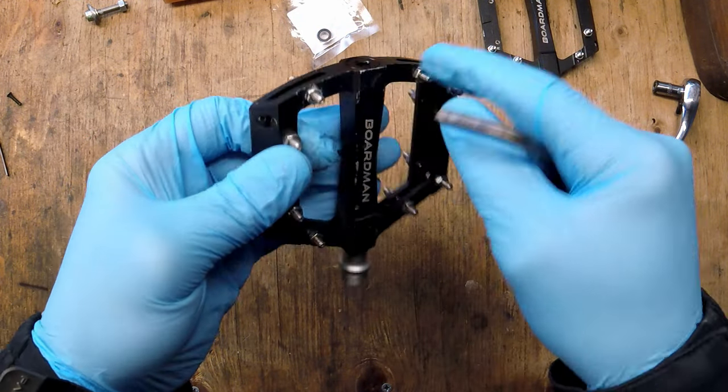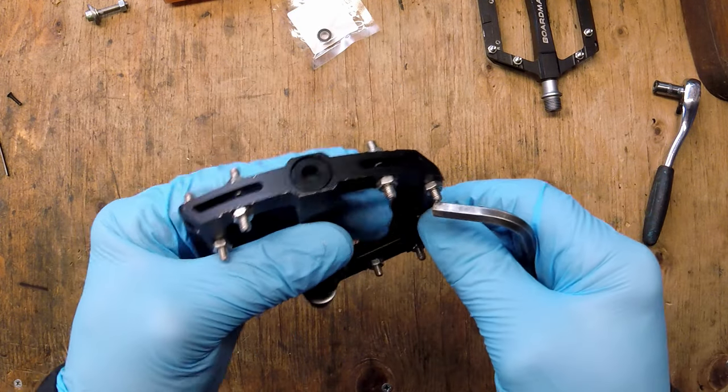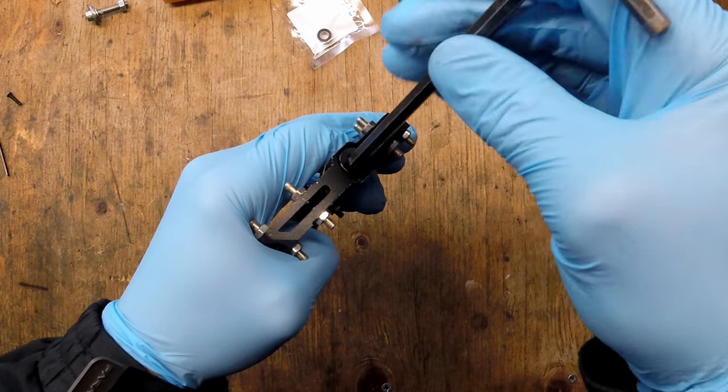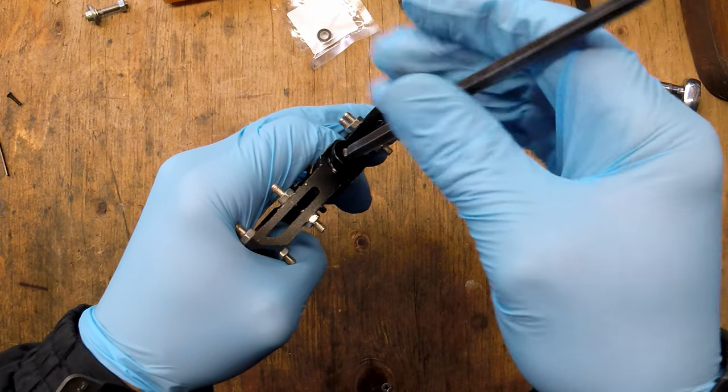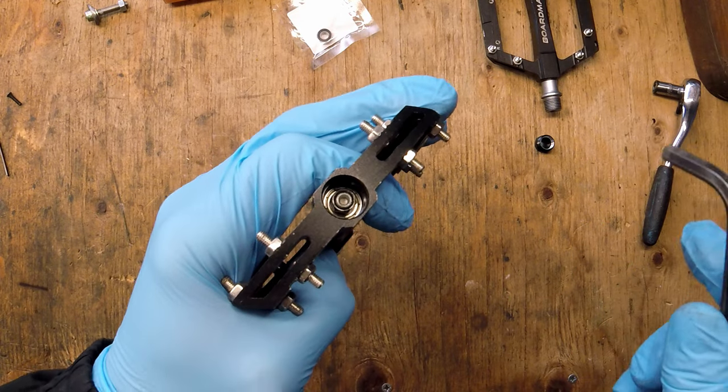They've got a main spindle and a bearing in the back and a bushing in the front. So I'm just going to quickly take out the weatherproof shielding. It stops all the water getting in and any crap getting into the main bearing in there.